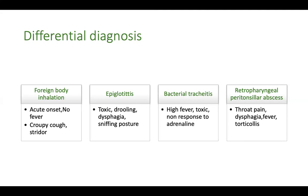In epiglottitis, the child looks more toxic with difficulty swallowing — there is dysphagia, drooling, and the baby typically takes up a sniffing posture with mouth open, leaning forward. Bacterial tracheitis can also cause croup-like presentation with fever and upper respiratory infection, but these children appear more toxic and will not respond to adrenaline nebulization. Retropharyngeal abscess can cause stridor, but patients present with throat pain, dysphagia, and torticollis.